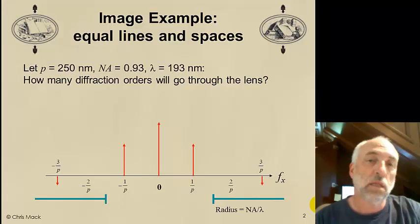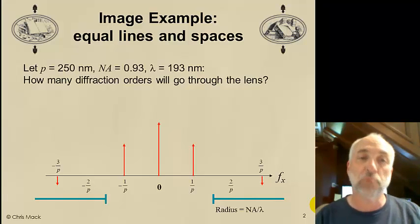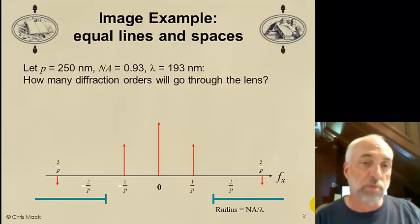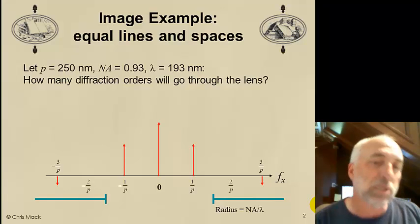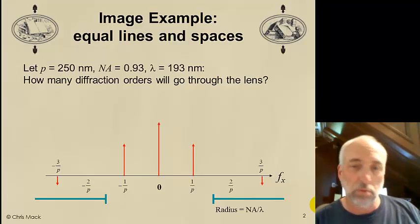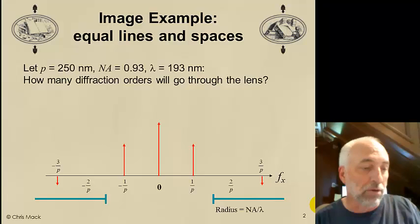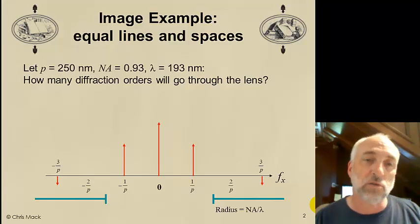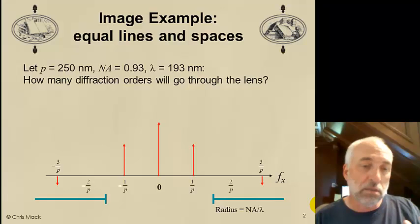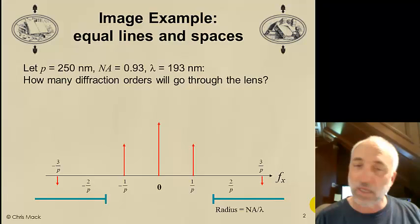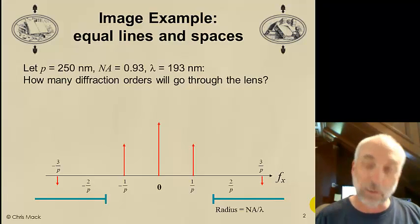We define the pattern by talking about the pitch. The pitch of the pattern is the line width plus the space width, and we'll assume that this pattern repeats forever. Now, no real mask pattern repeats forever, but if you have quite a few lines and spaces, maybe 10, there's not going to be any difference in the middle line and space in that array. In this case, 10 is about equal to infinity.